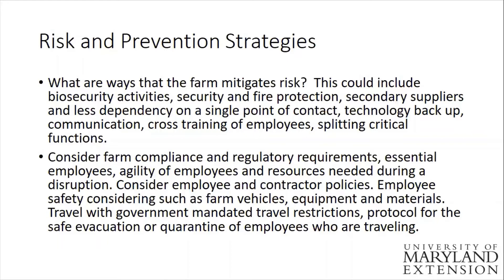Some people have alarm systems or ways to ensure their farming equipment is more secure. This could be secondary suppliers and less dependency on a single point of contact. Maybe it's technology — backing up computers and the communication piece. Also looking at the employees: are employees able to do multiple tasks, splitting critical functions so more than one person can fulfill a certain task.